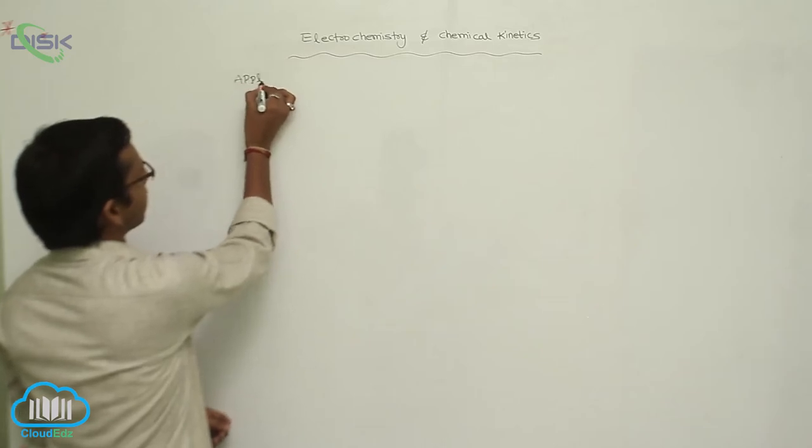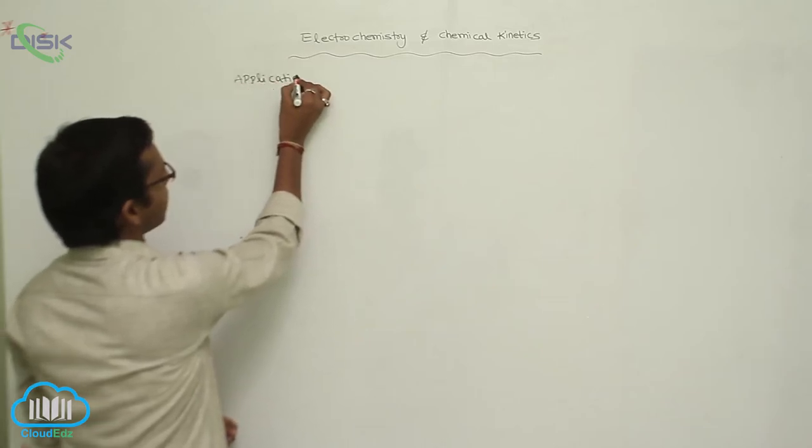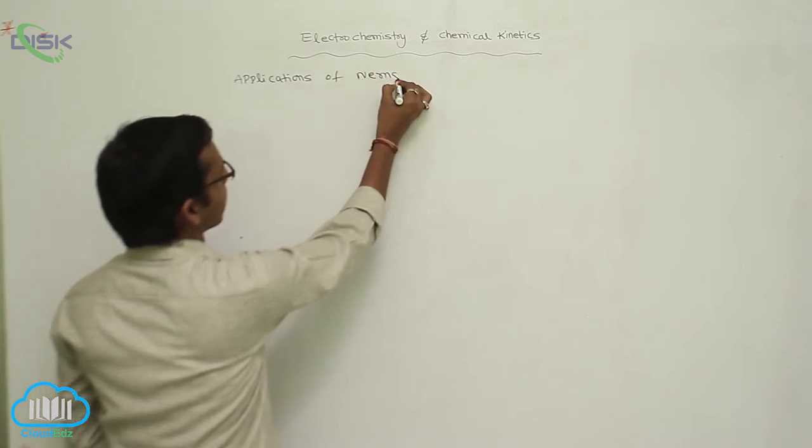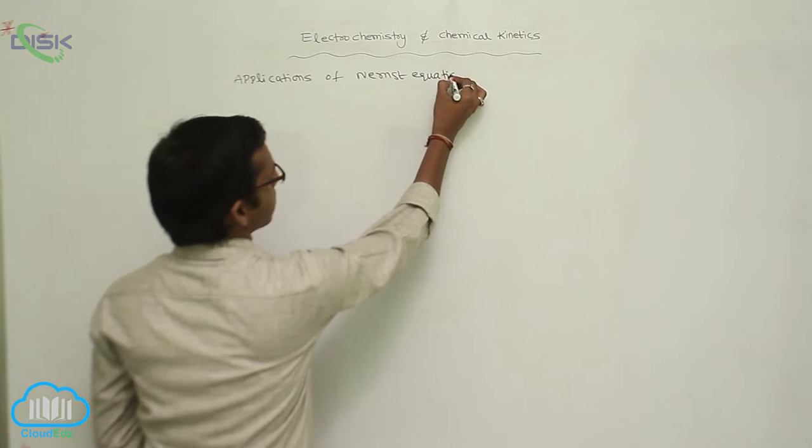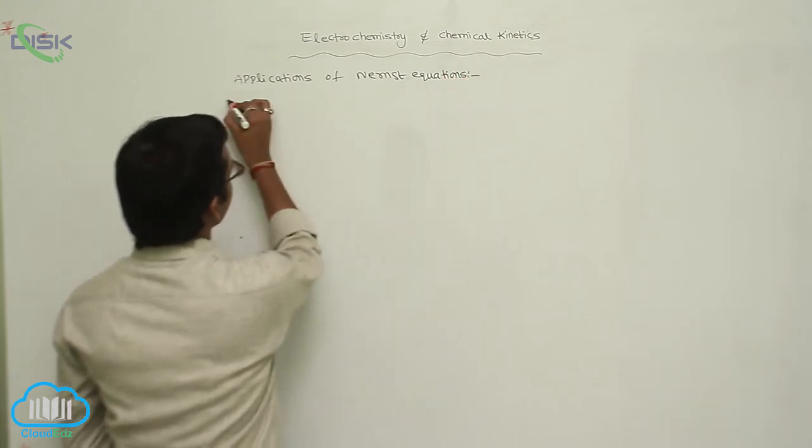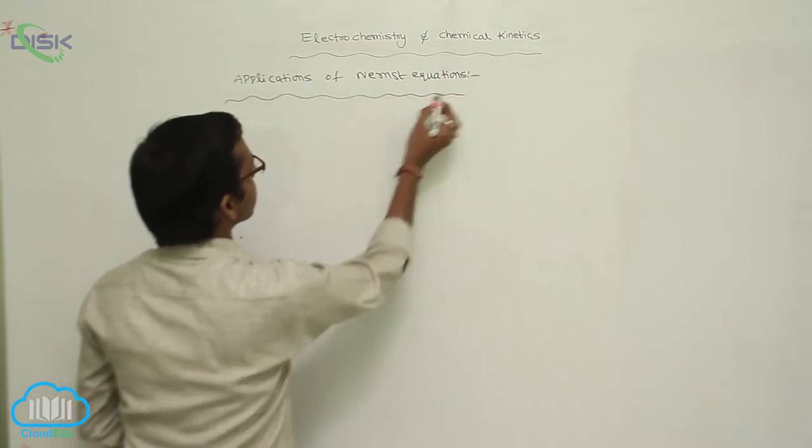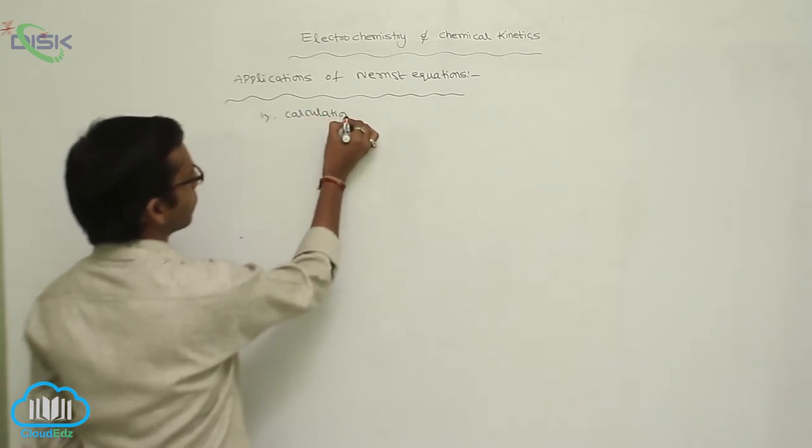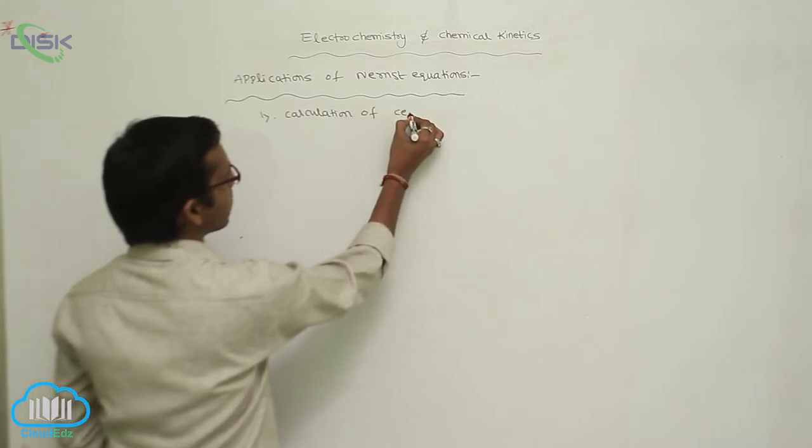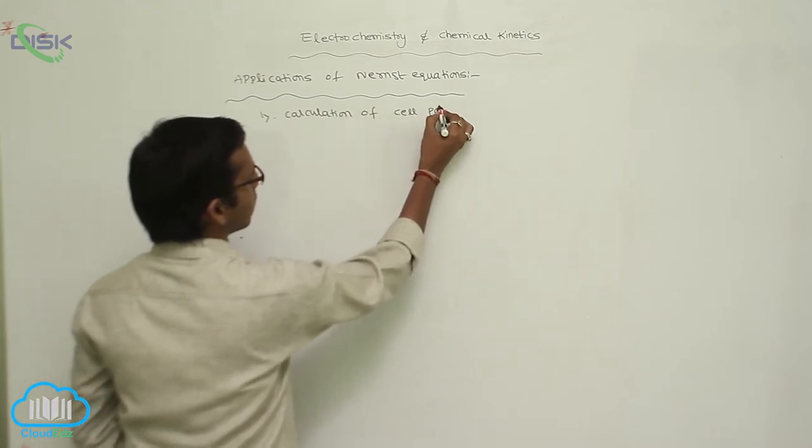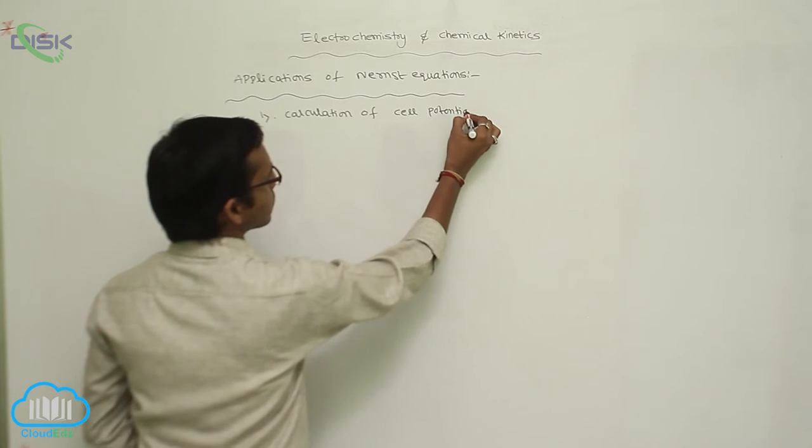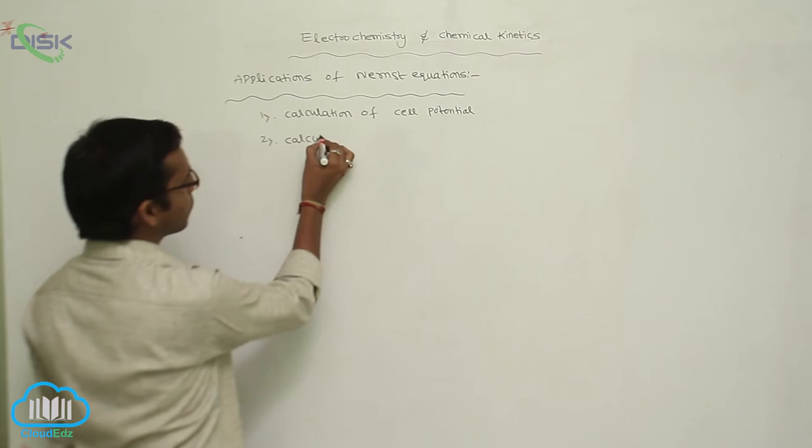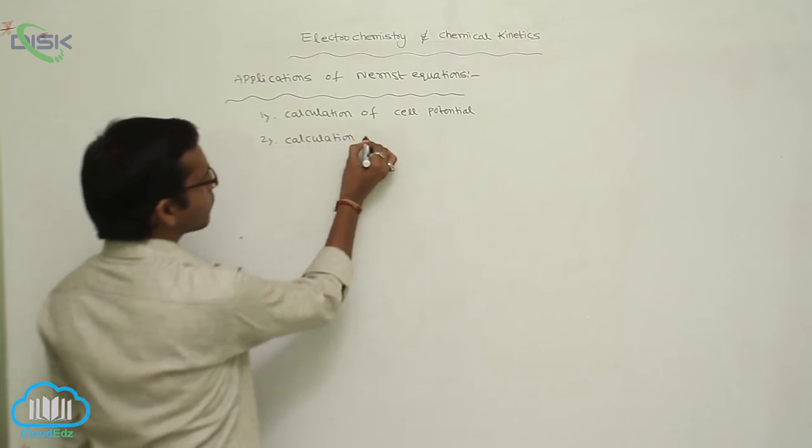Applications of Nernst Equation. The Nernst Equation is applicable for calculation of cell potential. The first property is calculation of cell potential, and the second property is calculation of cell potential.